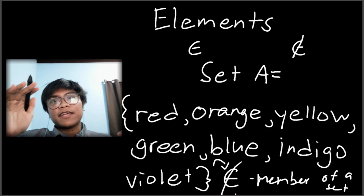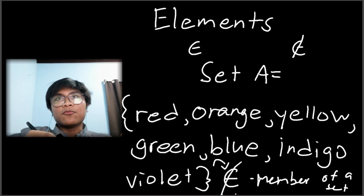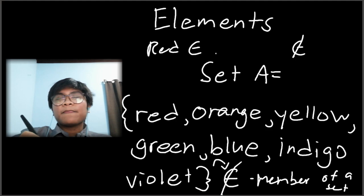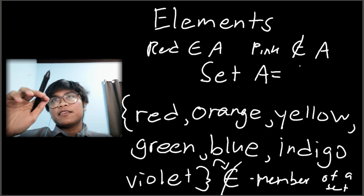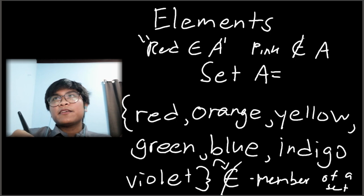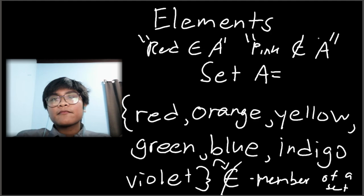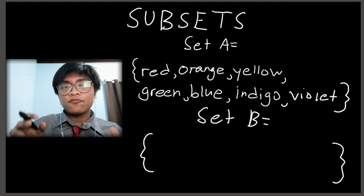Let's check with Set A, which contains the colors of the rainbow. We can say that red is an element of Set A. But if we were to say pink, that would not be an element of Set A. So: red is an element of A, and pink is not an element of A.